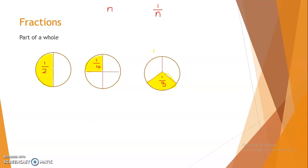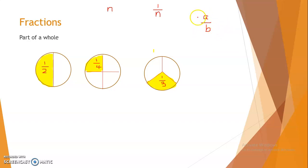That is part of a whole. So if one whole is divided into n equal parts, one part will represent one by n. This is a fraction. So a fraction is represented in the form a by b, where a is the numerator and b is the denominator. A represents the number of parts taken, and b represents the number of equal parts into which the whole is divided.